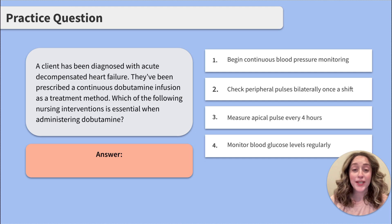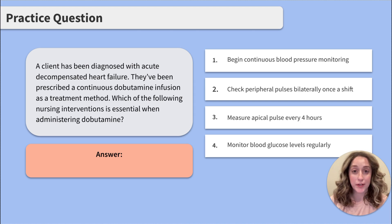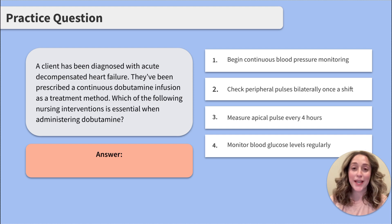One: begin continuous blood pressure monitoring. Two: check peripheral pulses bilaterally every shift. Three: measure apical pulse every four hours. Or four: measure blood glucoses regularly. Go ahead and press pause, make your choices, and when you're ready, press play and we can review together.